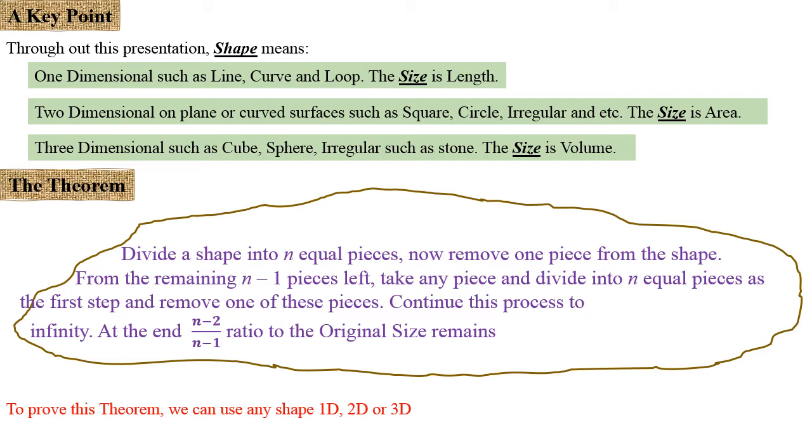To prove this theorem, we can use any of those shapes. There's no point going through all of them because they are quite similar in the way you show it.